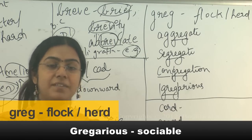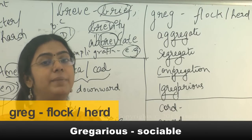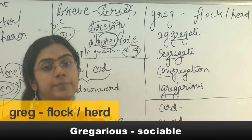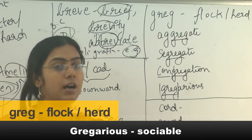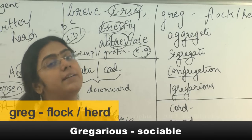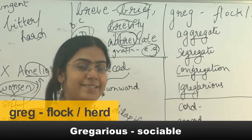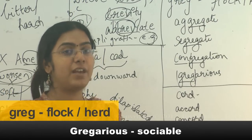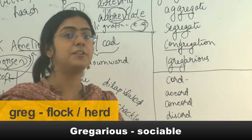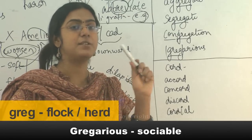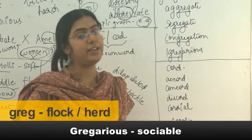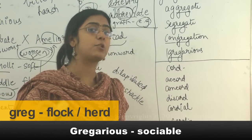Look at the animal kingdom: the male tiger or male lion tends to live alone most of his life — the females and cubs go together, but the male stays alone. These are cases of not being gregarious. Whereas wolves tend to exist in groups — they are gregarious animals. A male tiger or lion is not gregarious; he is socially averse, perhaps a sociopath.